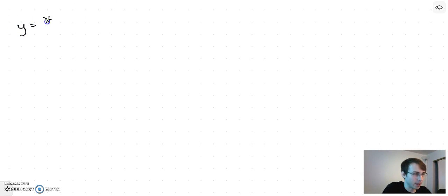Before we had a function y equals x plus 1 over x minus 1, and to find the vertical asymptotes we just set the denominator to zero. x minus 1 equals zero. Solve for that: x equals 1.